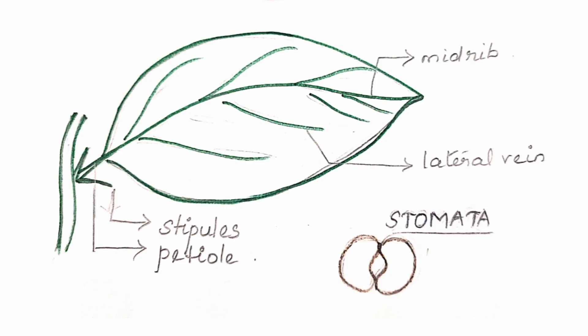The side veins branching from the midrib are called lateral veins. At the base of the leaf, we can see a pair of two lateral, hairy outgrowths called stipules.